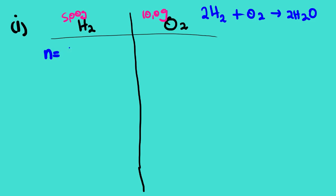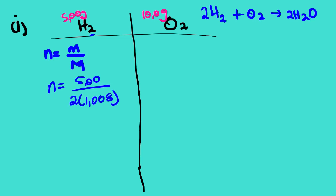The first thing we need to do is calculate the number of moles using the equation n = m/M. We have 5.00 grams of hydrogen. The molar mass of H₂ uses the subscript 2, so M = 2 × 1.008 = 2.016 g/mol. We calculate 5 divided by 2.016 and get 2.48 moles. This is the first number of moles.